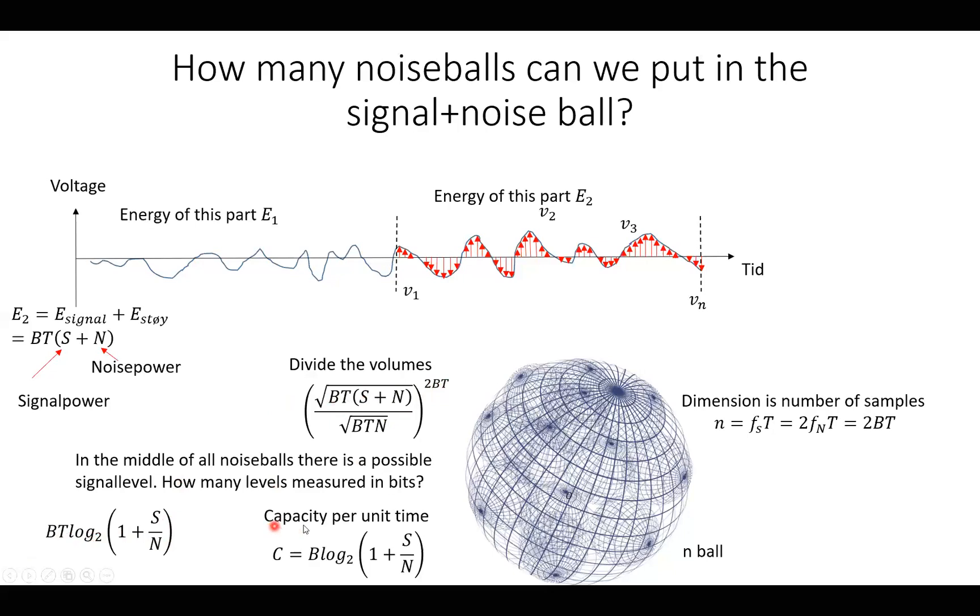And then if we look at capacity per unit time, we divide here by T, or the time. And then we get C is equal to B log 2(1 + S/N). And what is this? It's Shannon's formula.